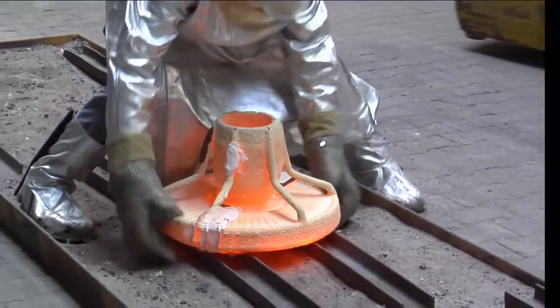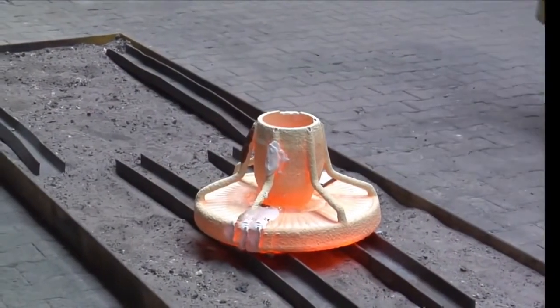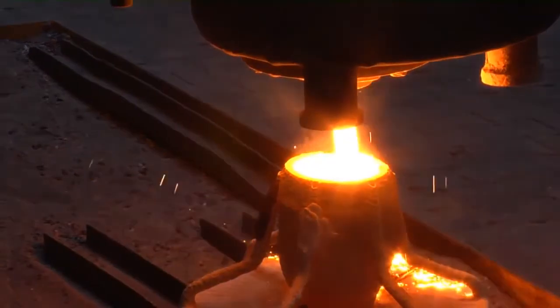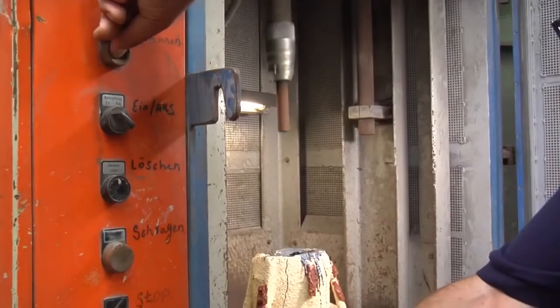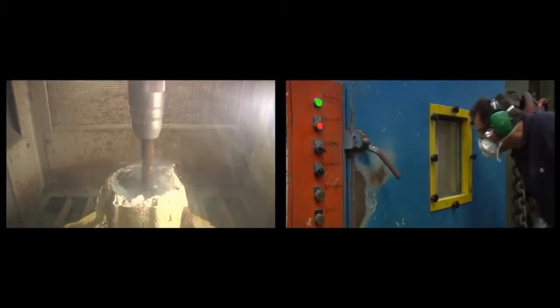Now the liquid steel, which is around 1600 degrees C, can be poured into the heated casting dies. The castings are removed once the molds have cooled.